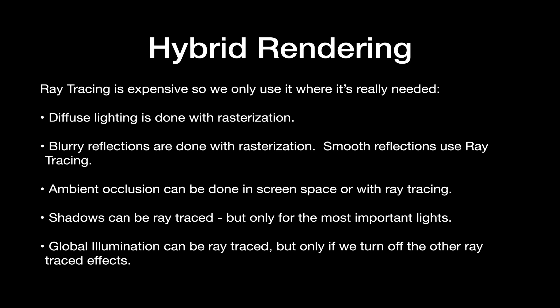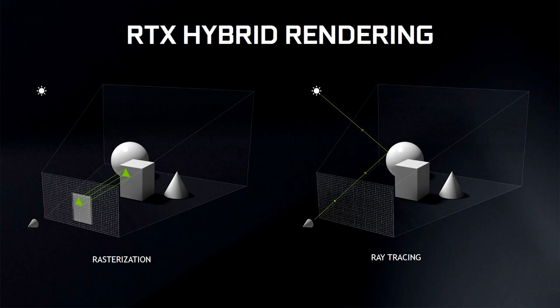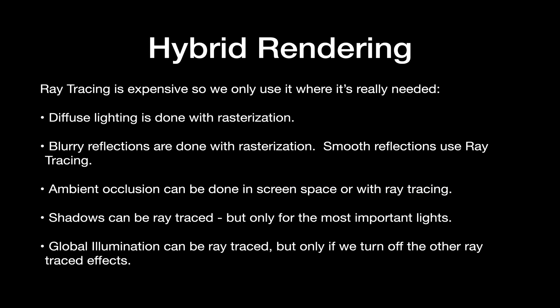Tracing rays is expensive. In order to do it in real time for a game we have to find a way to reduce the number of rays required to draw each pixel. Unreal and other game engines use a hybrid approach, using both rasterization and ray tracing together. Diffuse lighting is calculated entirely with rasterization; blurry reflections are done with rasterization while smooth sharp reflections are done with ray tracing; ambient occlusion can be done in screen space or with ray tracing depending on the budget; and shadows can be ray traced, but only the most important lights are traced to save on performance.